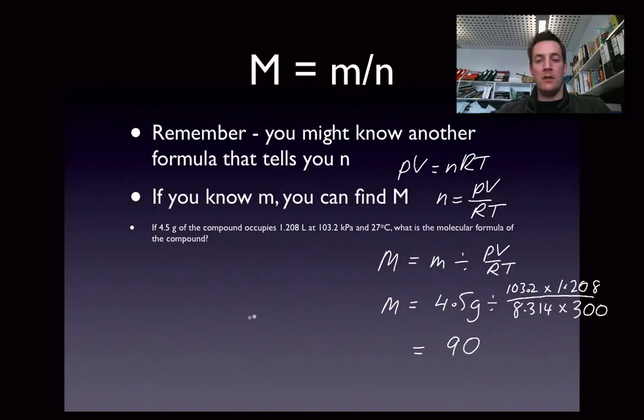So if we know that our empirical formula was CH2O and that this had a molar mass if it actually existed in that form of 45, and our molar mass is 90, then 90 divided by 45 is 2. So our actual formula is going to be twice as big as this one, and it's going to be C2H4O2.